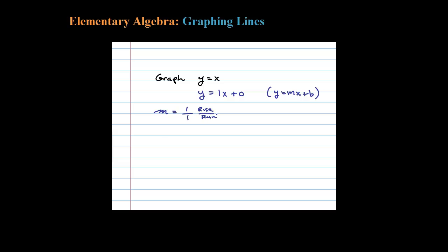The y-intercept occurs when x is 0. When x is 0, for this equation y is 0. Once you have your y-intercept and your slope, you're ready to graph it. This here will be my x-axis, and then here we have the y-axis.